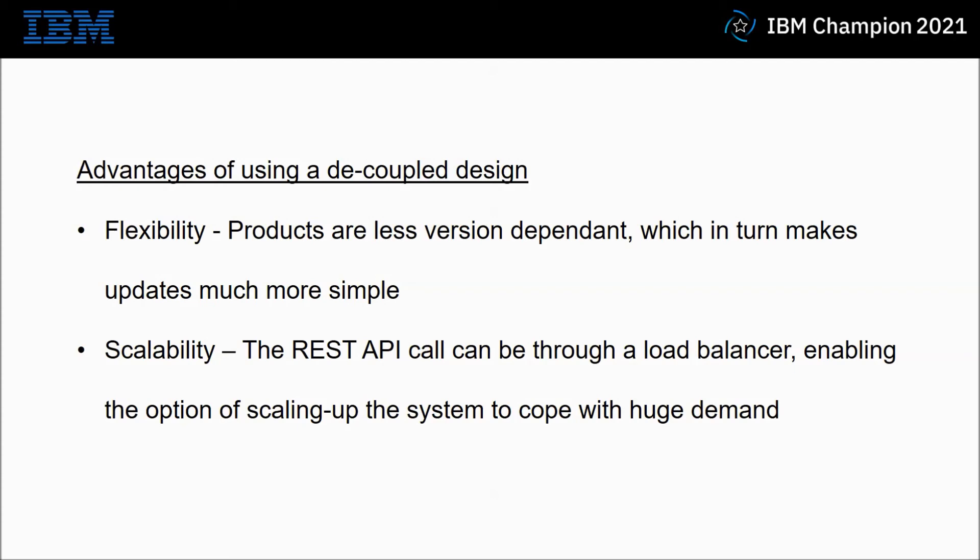A few words on the advantages of using the software decoupled design. The first advantage is flexibility: products are less version dependent, which makes updates much more simple. With IIB 10 you're using ITX 9, and with ACE 11 you're using ITX 10. With this decoupled design you could, for example, use IIB 10 with ITX 10. The second advantage is scalability: the REST API call can be made through a load balancer, enabling you the option of scaling up the system to cope with huge demand.